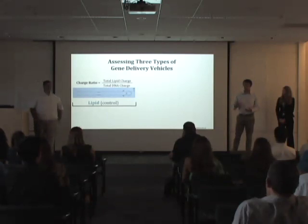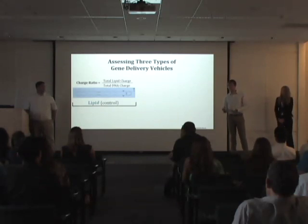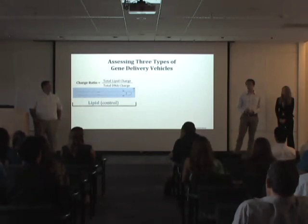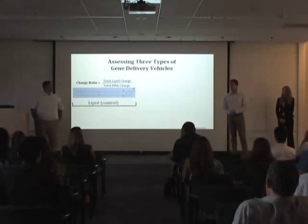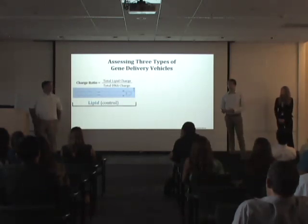If we have a charge ratio that is very low, the lipid nanoparticle will likely not be taken up by the cell. And if a charge ratio is too high, it will be taken up by the cell, but our gene of interest will not be expressed. So we are looking for a Goldilocks range where we will be able to have our lipid nanoparticle taken up by the cell and also have our gene of interest expressed.